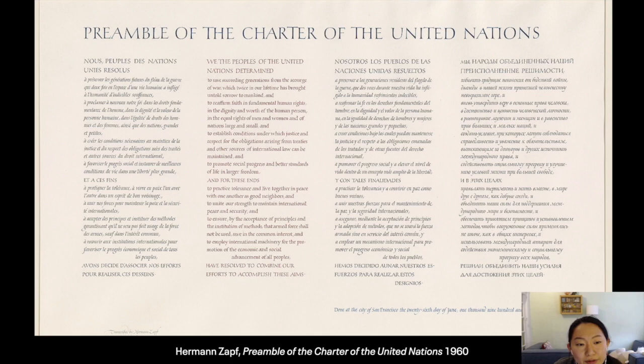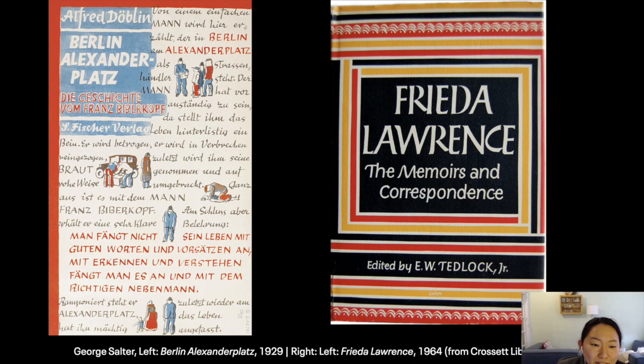George Salter is a well-known character in the world of cover design and calligraphy. He was originally German and emigrated to the U.S. He taught at the Cooper Union in New York City, and inspired an entire generation of lettering artists who later went into commercial lettering and lettered for books.